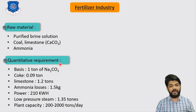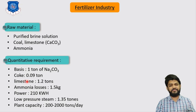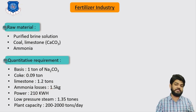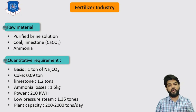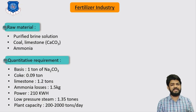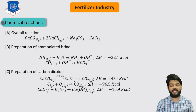Here are the quantitative requirements for the production of 1 ton of sodium carbonate. We require around 0.09 tons of coke (coal), 1.2 tons of limestone, and ammonia loss is around 1.5 kg. Power consumption is around 210 kWh, low-pressure steam required is around 1.35 tons, and plant capacity ranges from 200 to 2000 tons per day.